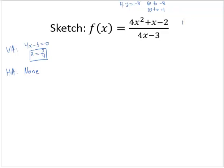But notice that the numerator is degree 2 and the denominator is degree 1. When the degree of the numerator is exactly 1 more than the degree of the denominator, that tells us that we have a slant asymptote. So let's find the slant asymptote.